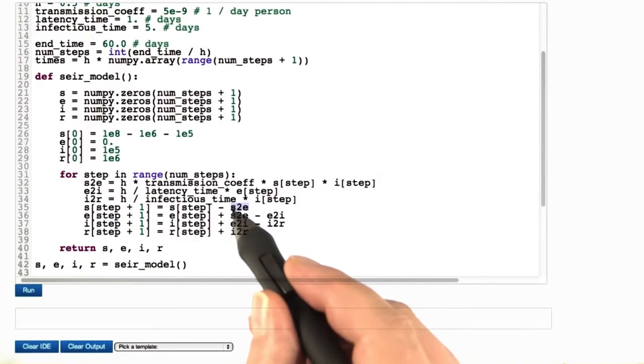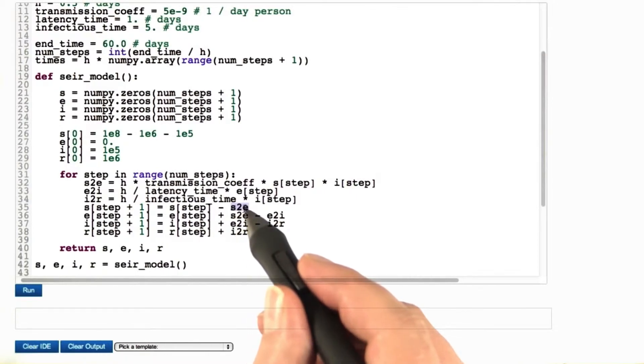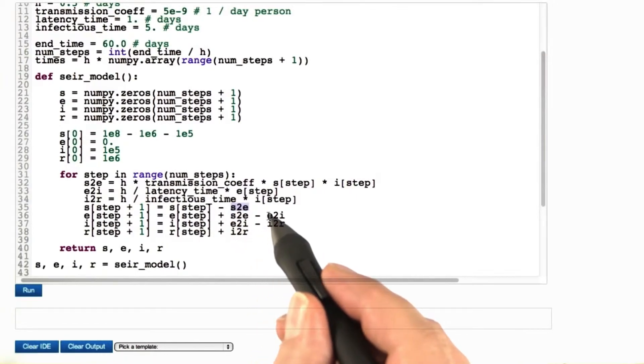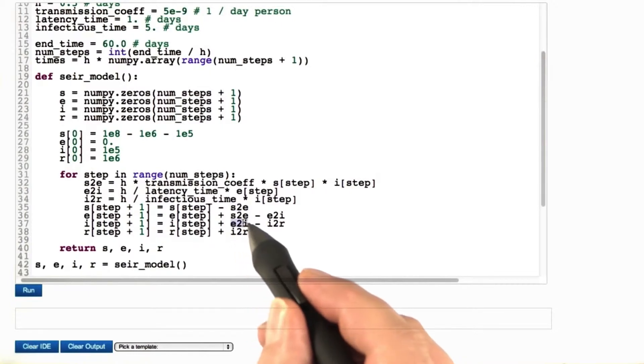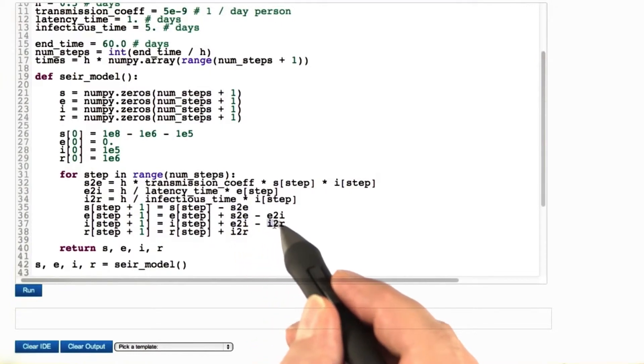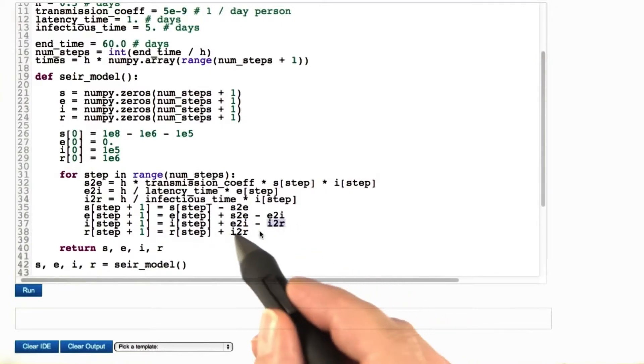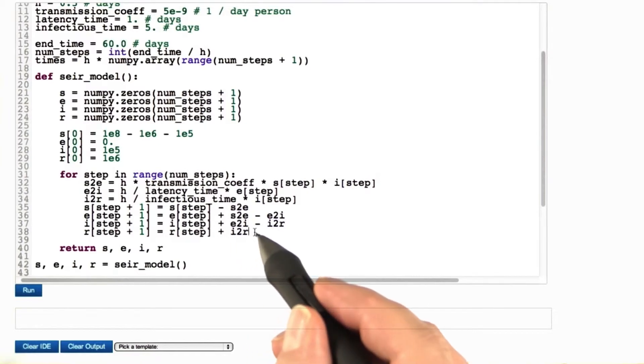If you write it like that, it's easier to read, and you can immediately see that the total number is conserved. The number of persons we lose here, we gain here. The number we lose here, we gain here. And the number we lose here is gained here.